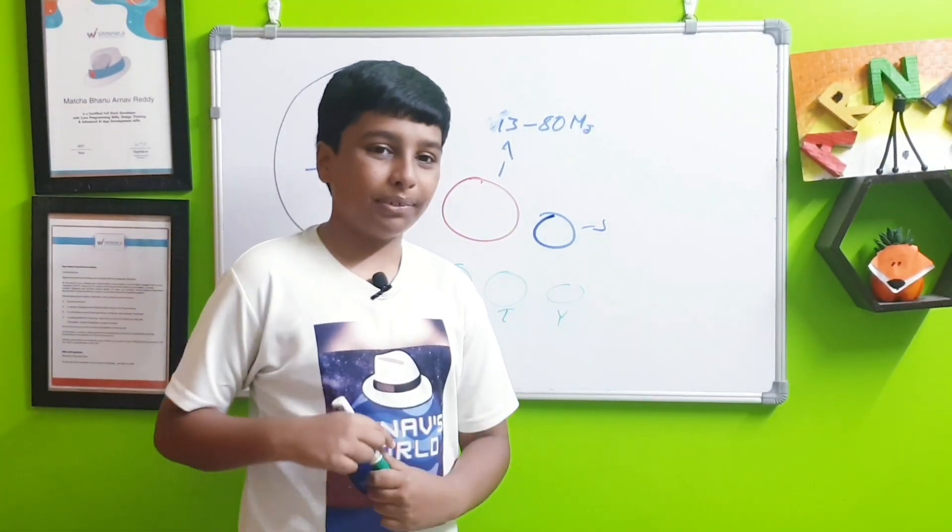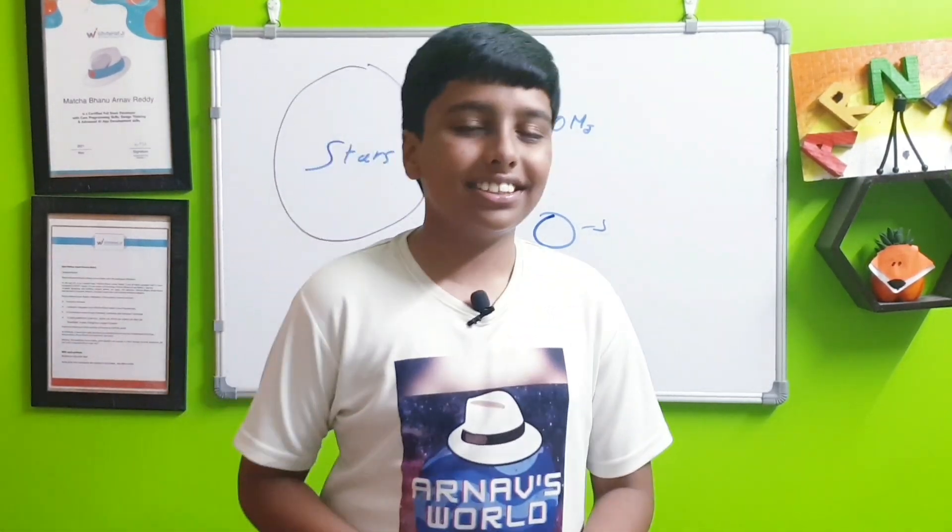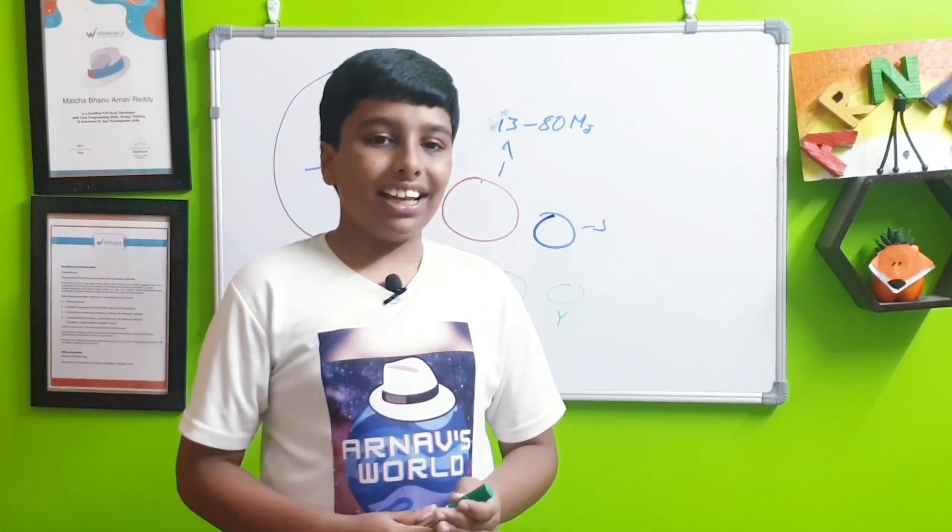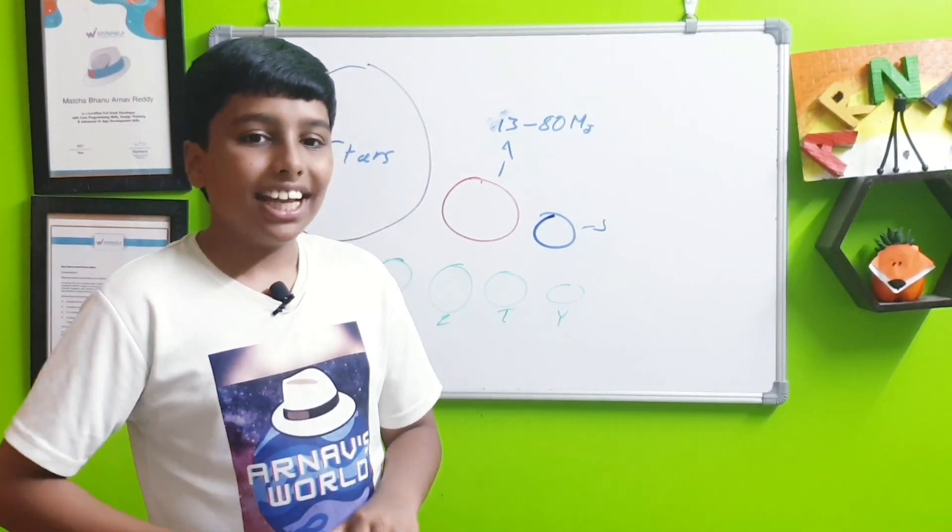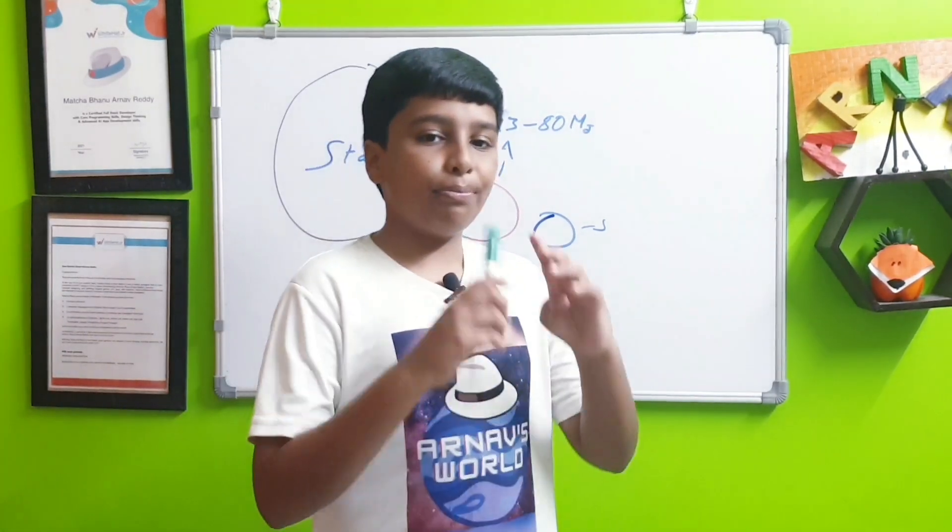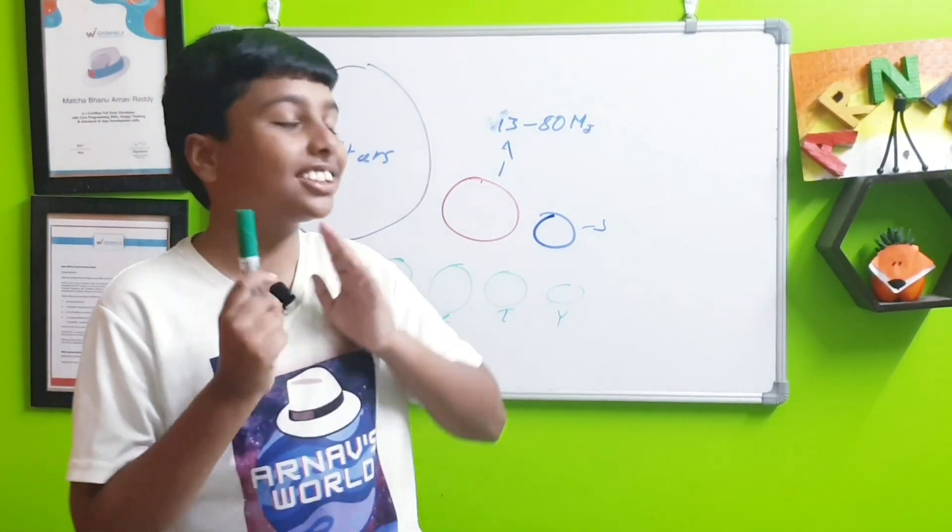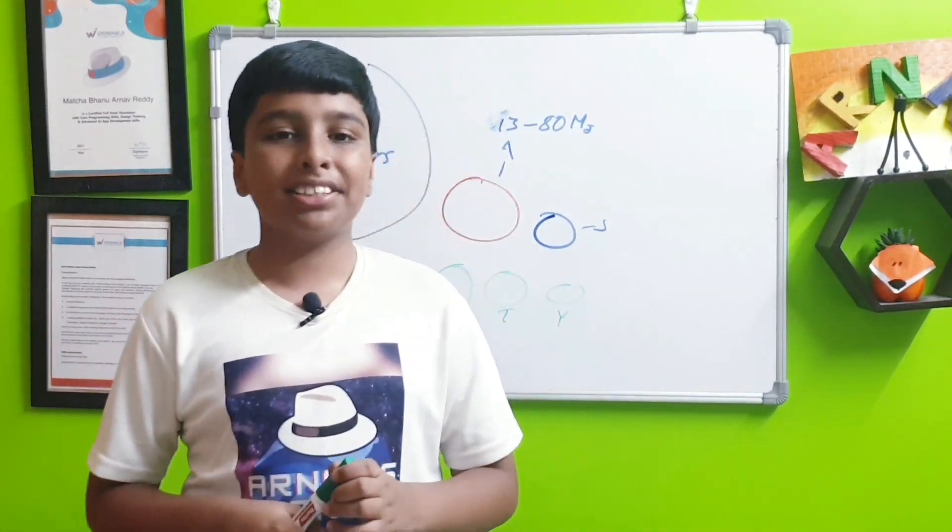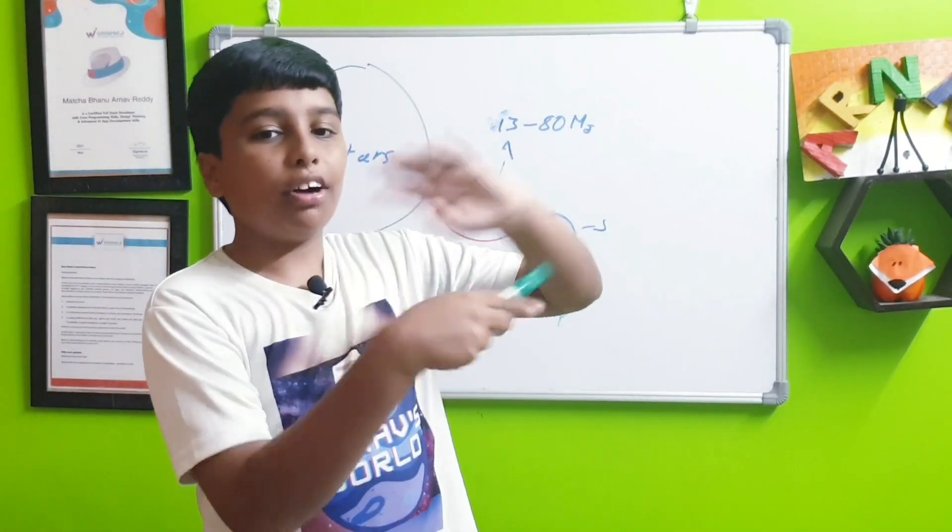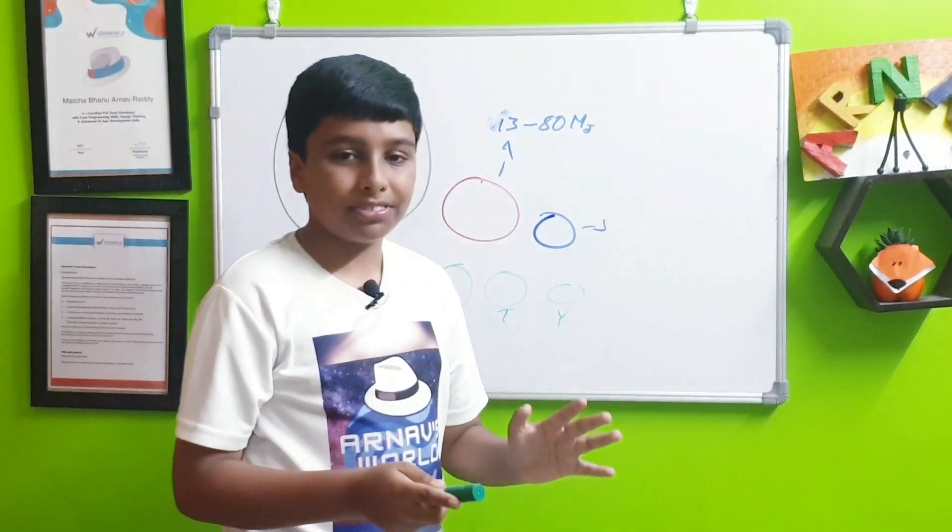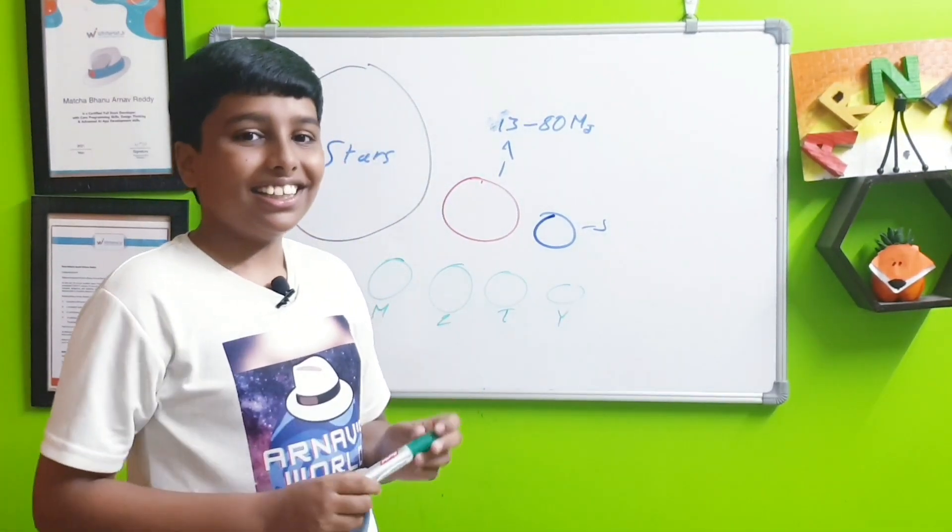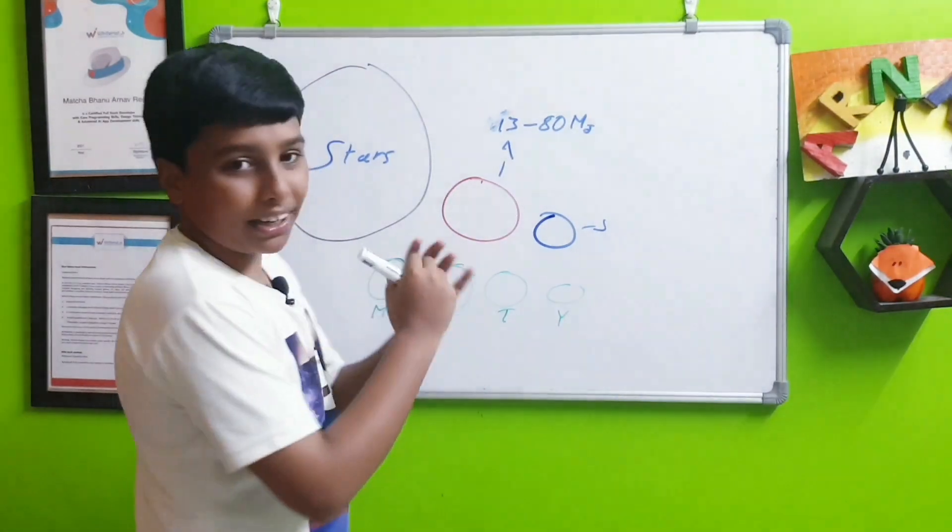The closest system with a brown dwarf is the Luhman system. It is the third closest system to our solar system. After the Proxima Centauri system, the Centauri system, and in second place is the binary star - there is a binary system of two brown dwarfs to be exact.